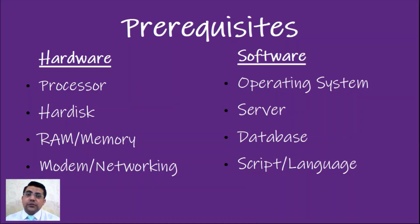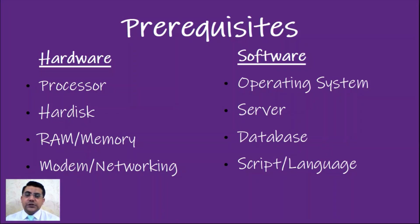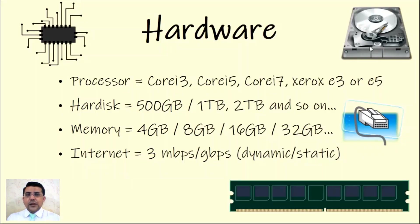By hardware, we typically mean the processor, the hard disk, RAM or the memory size, and modem or networking devices. By software, I mean the operating system — the most common and very first prerequisite that we have to install to operate our computer system or mobile devices. Then we need a server for web-based applications, databases, and scripting languages.